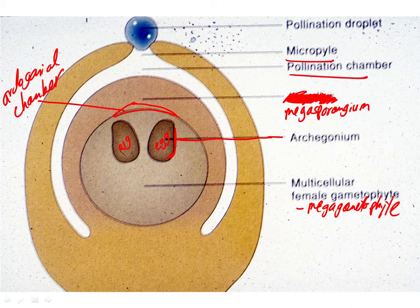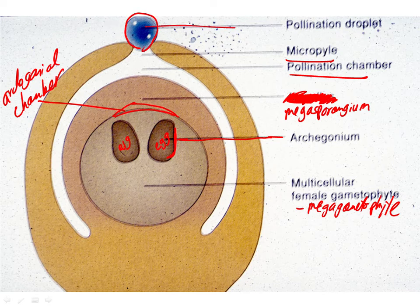Now we see another structure — an ephemeral structure without a cellular nature — and that is what's called the pollination droplet. So let's talk about that pollination droplet now.